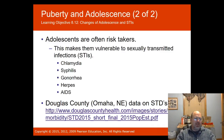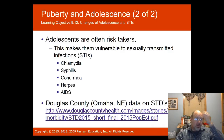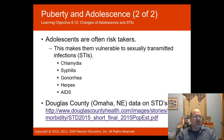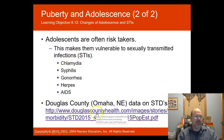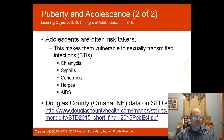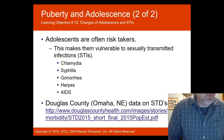Adolescents are often risk-takers, partly due to their brain development, which also makes them vulnerable to sexually transmitted diseases — STDs or STIs. Chlamydia has grown significantly in Omaha to near-epidemic proportions. Syphilis, gonorrhea, herpes, and AIDS are also spread mostly among youth aged eighteen to twenty-five.